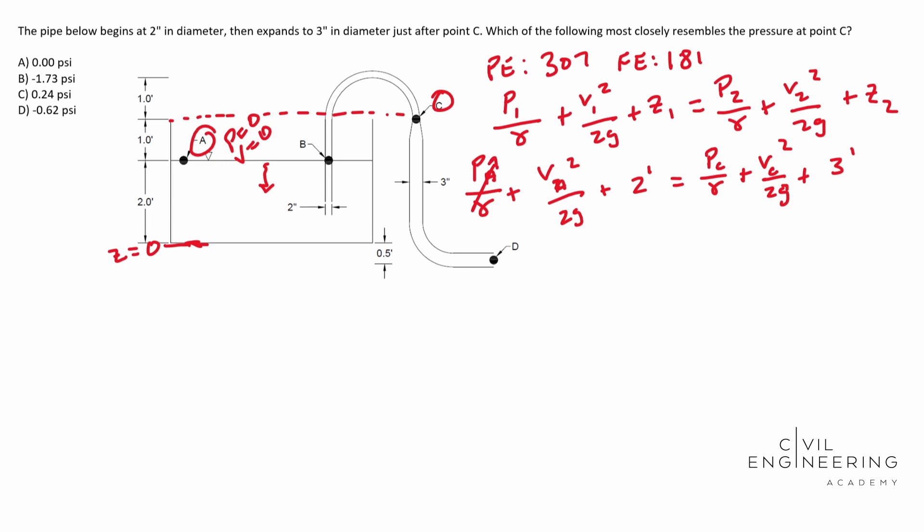All right. So we know this guy goes to zero. We know this guy goes to zero. We know that's two and we don't know the pressure yet. We don't know the velocity, but we do know the elevation. So to simplify this guy out, we end up with two feet is equal to the pressure at C over gamma plus your VC squared over 2g plus three feet.